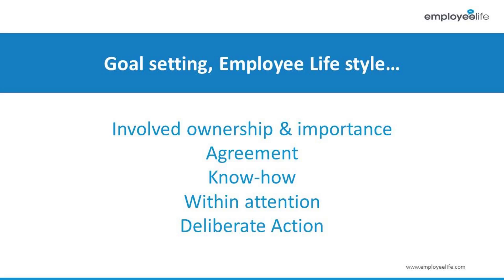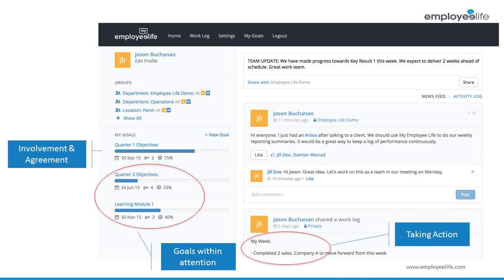And finally, they need to take continuous, deliberate, and relevant action. No goal ever achieves itself, and so this intention to do what is necessary is extremely important. This is how Employee Life supports this process. As part of the goal setting drumbeat, an organisation would usually set a number of strategic objectives or focus areas for the year. Once these are agreed by the leadership team, each team and the members of the team would commit to how they can help the organisation achieve these objectives.